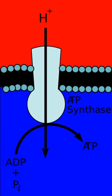Bacterial electron transport pathways are, in general, inducible. Depending on their environment, bacteria can synthesize different transmembrane complexes and produce different electron transport chains in their cell membranes. Bacteria select their electron transport chains from a DNA library containing multiple possible dehydrogenases, terminal oxidases, and terminal reductases. The situation is often summarized by saying that electron transport chains in bacteria are branched, modular, and inducible.